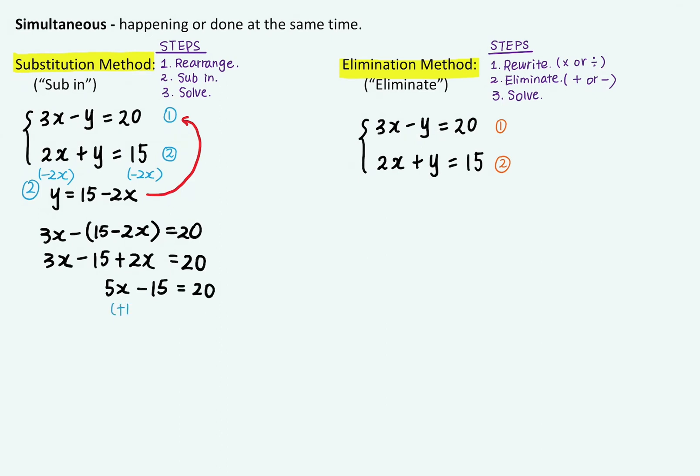And if I plus 15 on both sides, on the left hand side I'm left with 5x. And on the right hand side I have 20 plus 15, which is 35. So now my equation becomes 5x is equal to 35.